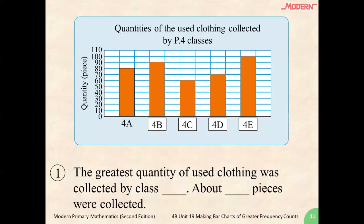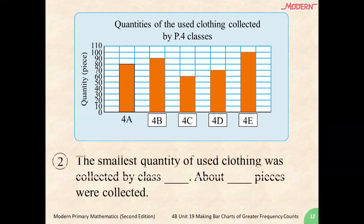Now, let's answer some questions regarding the bar graph. The greatest amount collected is by which class? How many were collected? The greatest amount of clothing was collected by 4E, and around 100 pieces of clothing were collected. Were you able to get this information from the bar chart? The smallest amount of clothing collected — which class was it, and how many pieces were collected? The smallest amount was collected by 4C, and only about 60 pieces were collected. Were you able to get this information from the bar graph?